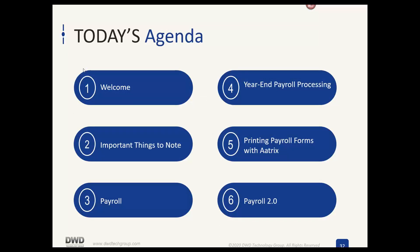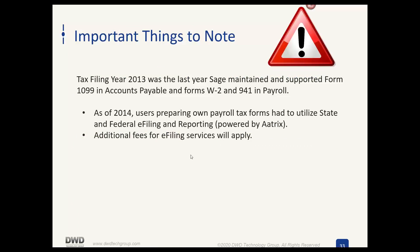In the second half, we'll talk about things specific to payroll, year-end processing, printing payroll forms with Atrix, and Payroll 2.0 — which is now actually version 2.2. As background: back in 2013 was the last year Sage maintained the payroll and accounts payable forms internally. Atrix picked up that responsibility as of 2014. For any state or federal e-filing for payroll or 1099s, that program must be installed.